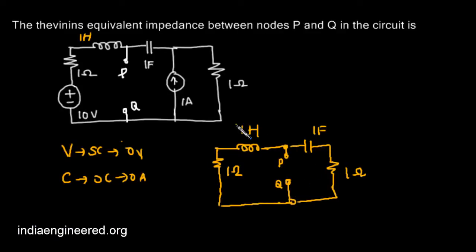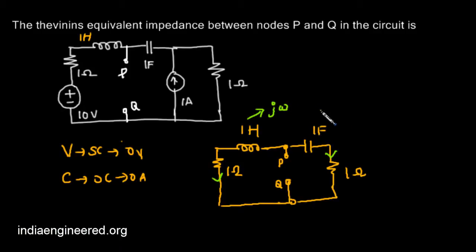We have two branches in parallel across P and Q. The impedance of the first branch: 1 henry offers an impedance of jωL, which is jω. The one farad capacitance offers an impedance of 1/(jωC), which is −j/ω since C equals one. Now what is the impedance of each branch?